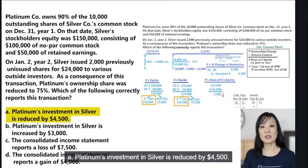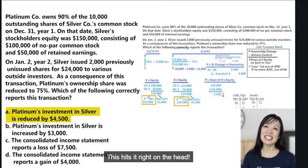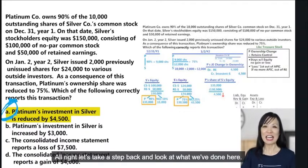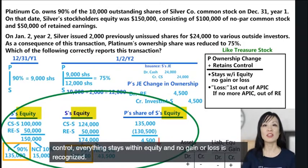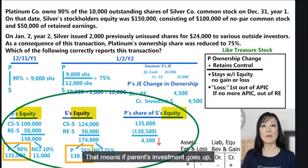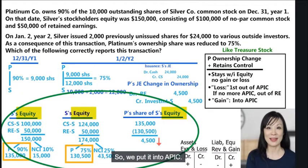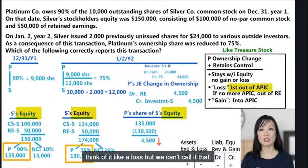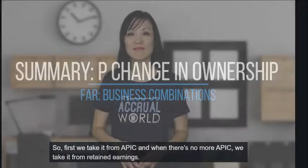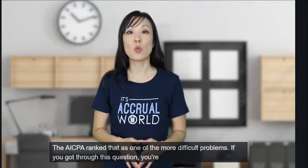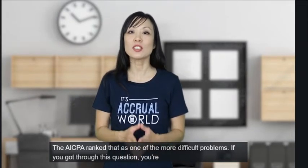The correct answer is: Platinum's investment in Silver is reduced by $4,500. All calculations center around Silver's equity. When a parent's ownership changes while it retains control, everything stays within equity and no gain or loss is recognized. If the investment goes up, it's like a gain — credit APIC. If it goes down, it's like a loss — debit APIC first, then retained earnings. The AICPA ranks this as one of the more difficult problem types.